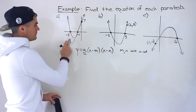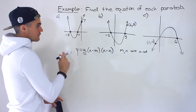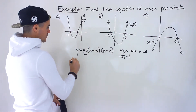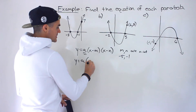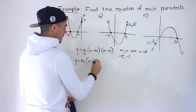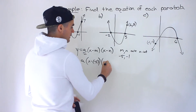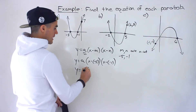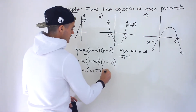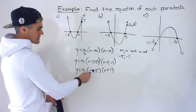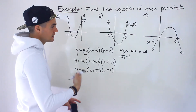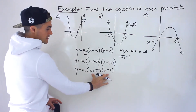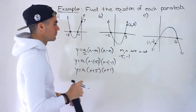Starting with part a, we have x-intercepts of negative 5 and negative 1, so those are m and n. We plug those in: y = a(x - (-5))(x - (-1)), which gives us y = a(x + 5)(x + 1). Notice it's always the opposite sign. If you're comfortable with quadratics, you could skip directly to this step just from seeing the intercepts.